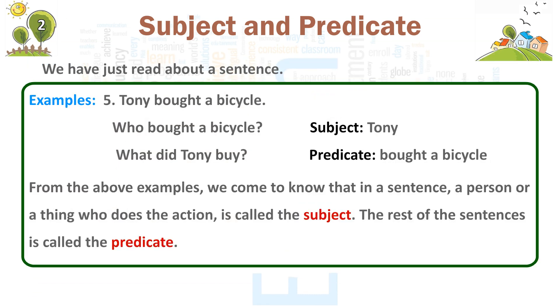Example 5: Tony bought a bicycle. Who bought a bicycle? Subject — Tony. What did Tony buy? Predicate — Bought a bicycle.